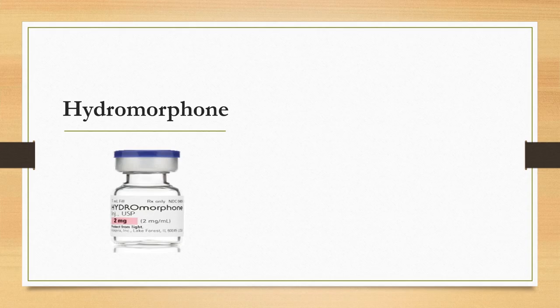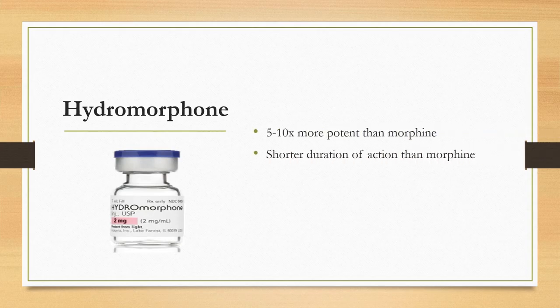Hydromorphone (Dilaudid) is a semi-synthetic opioid derived from morphine. Although its pharmacokinetic profile is similar to morphine, it is five to ten times more potent. Despite its higher potency, its duration of action tends to be shorter than morphine, and unlike morphine, hydromorphone has no active metabolites, making it recommended over morphine for patients with renal failure.